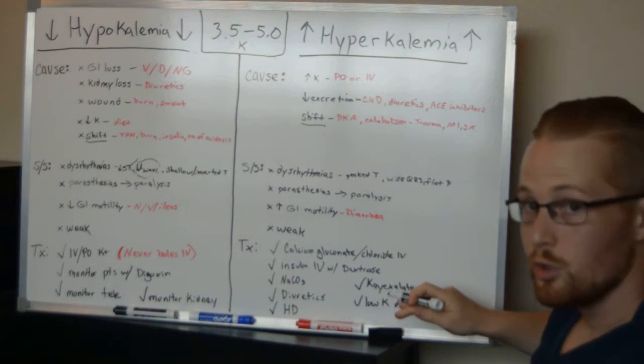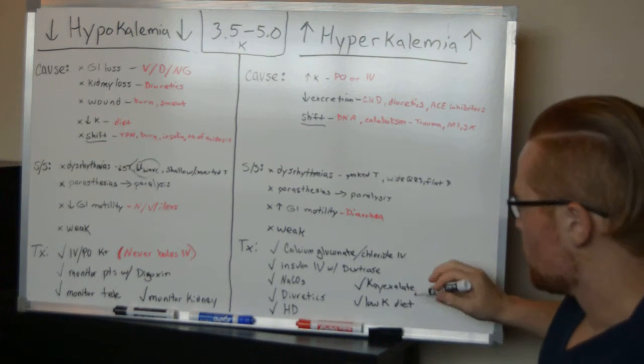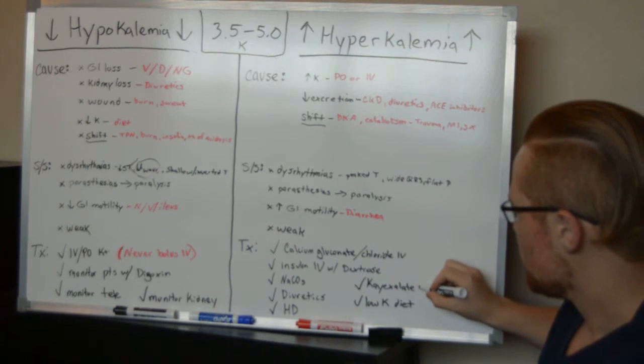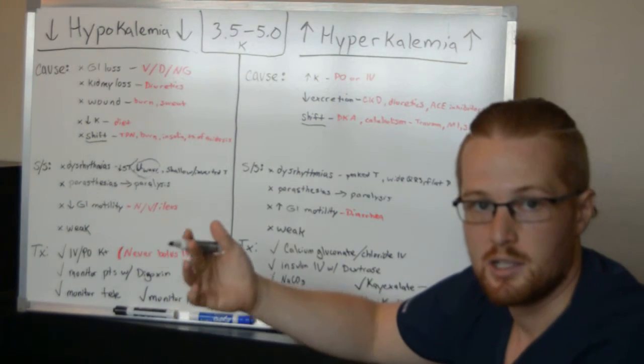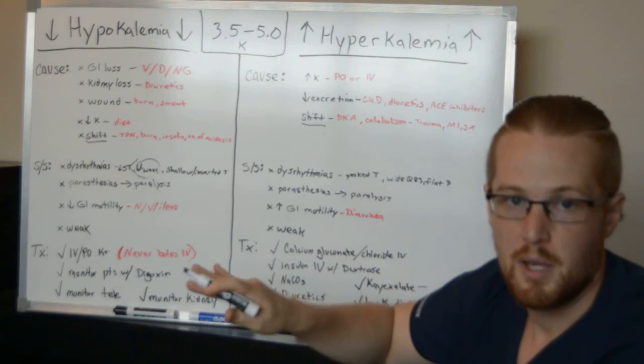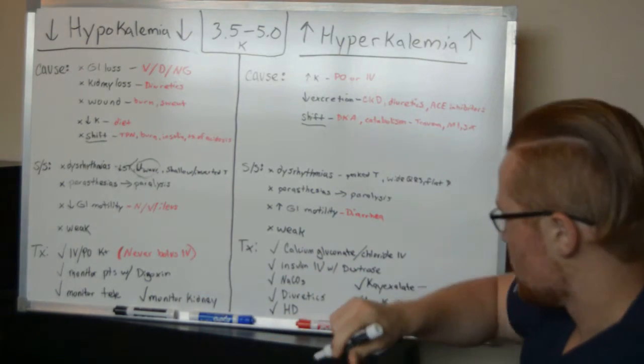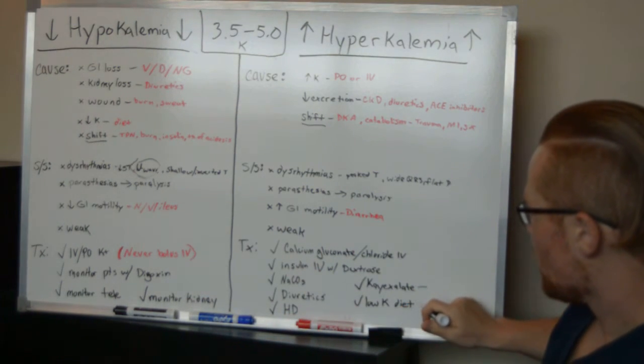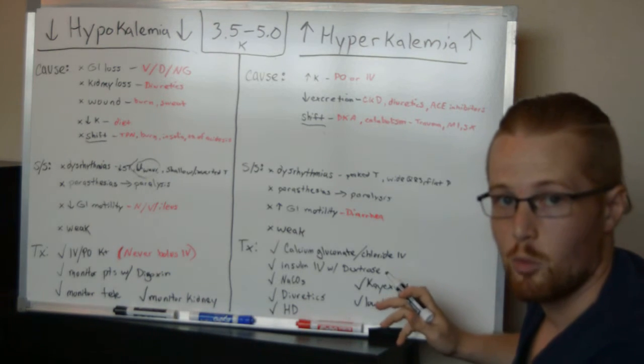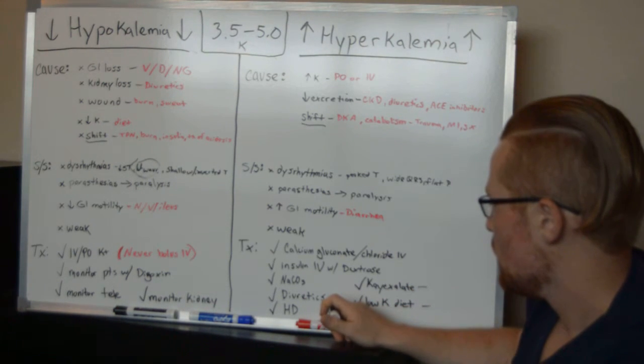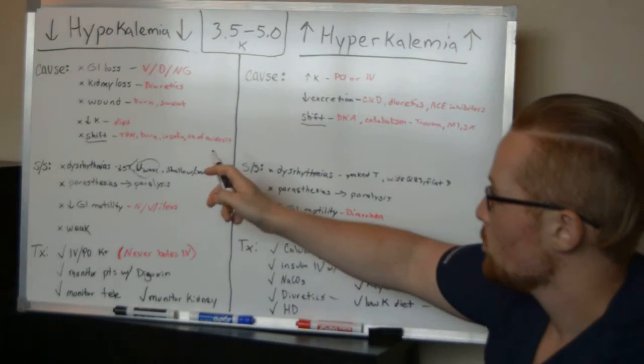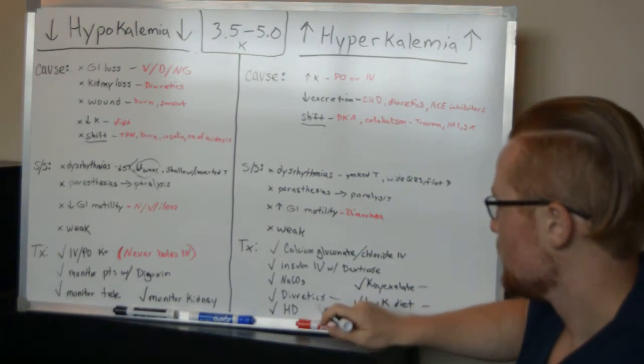Now, one solution for eliminating potassium from the body is K-exalate. And what this does is it absorbs with the potassium in the body and in the GI system. And it's going to give the patient diarrhea and it's going to push the potassium out of their body. You want to have them on a low potassium diet so they're not getting more potassium in their body. You can put them on loop diuretics to help them to urinate out the potassium.